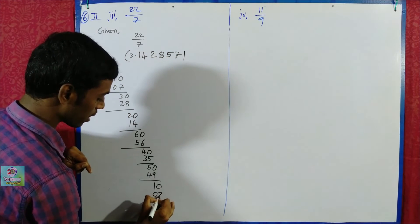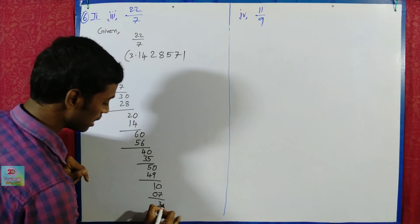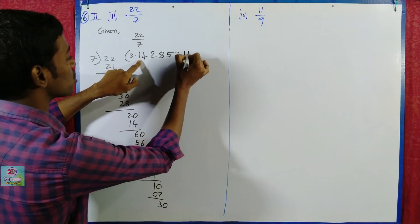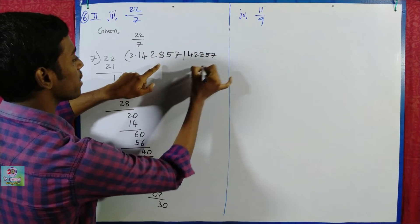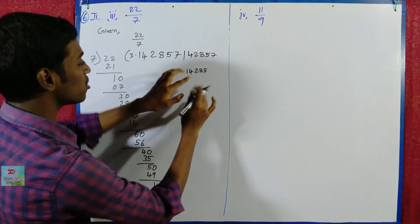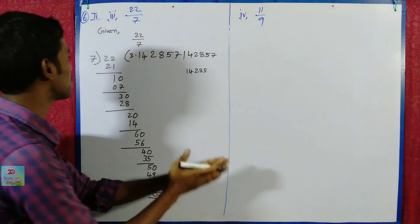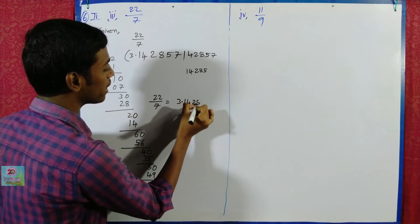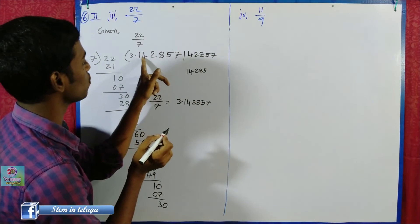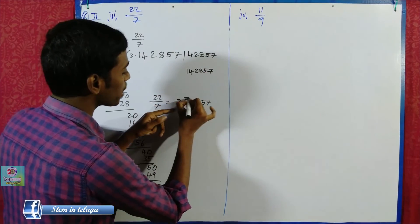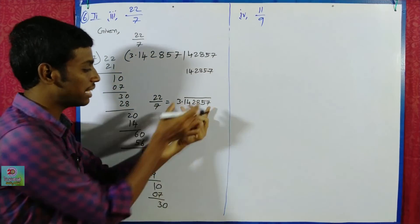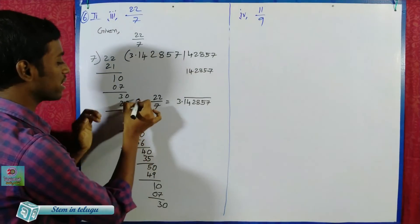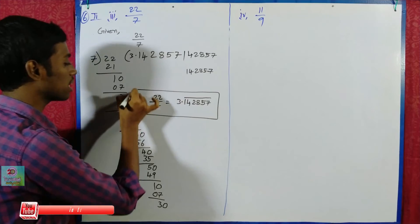Remainder 1. 7×10=70, with remainder 1. Then 0 equals 0. The repeating block is 1, 4, 2, 8, 5, 7. The pattern 142857 repeats. So 22 by 7 is equal to 3.142857 repeating. We can write it as 3.142857̄ with 142857 repeating. Therefore, 22 by 7 equals 3.142857 recurring.